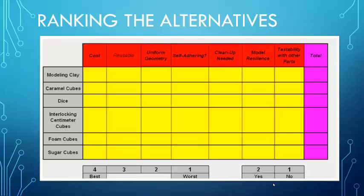Now, our setup. Now, this is what we had before. We have our different kinds of, off to the left, we have our different kinds of ideas. We had the modeling clay, the caramel cubes, the dice, the interlocking centimeter cubes, foam cubes, and sugar cubes.